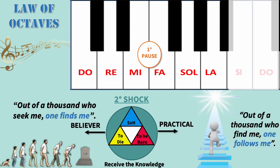To transcend that first pause, we need to receive that which will give us that second shock — that impulse that allows us to break that pause and continue ascending the ladder towards our being. We have the possibility of giving ourselves that second shock by receiving objective knowledge: the knowledge of the three factors of the revolution of consciousness, which are psychological death, spiritual birth, and sacrifice for humanity. There we will discover that our existence has a much greater purpose. There are really very few who, among so many pseudo-esoteric theories and schools, manage to find pure knowledge. Out of a thousand who look for it, one finds it.